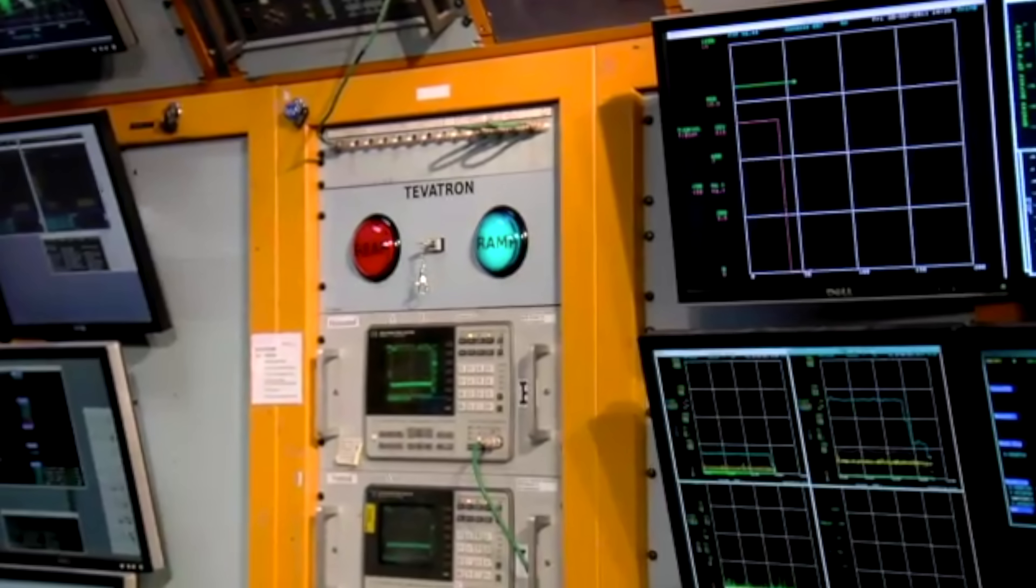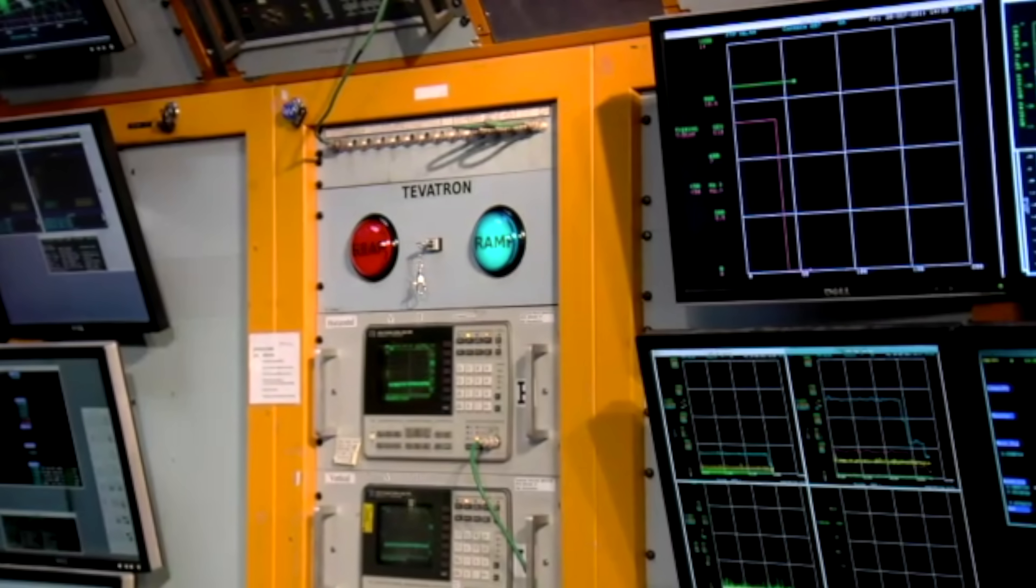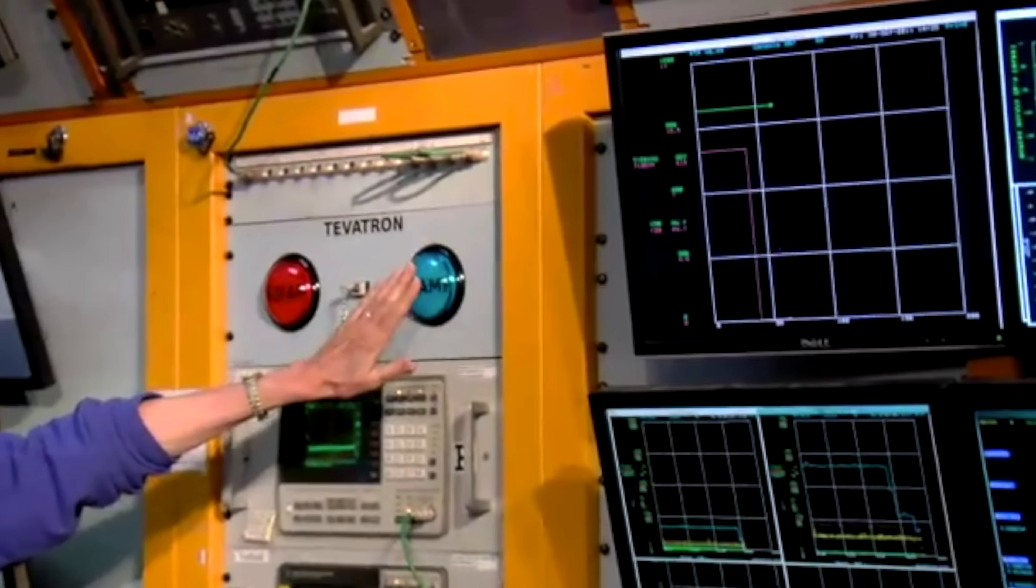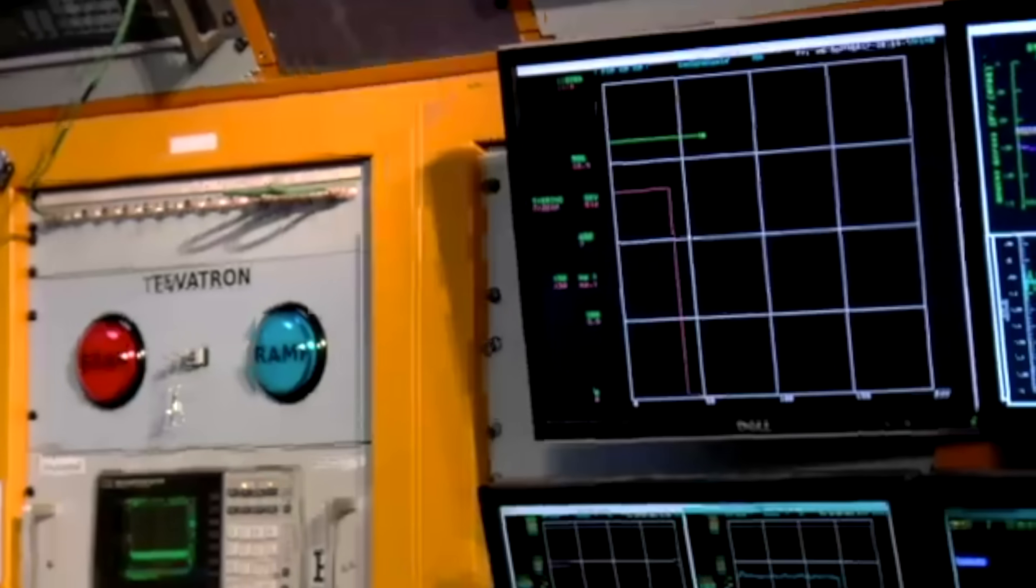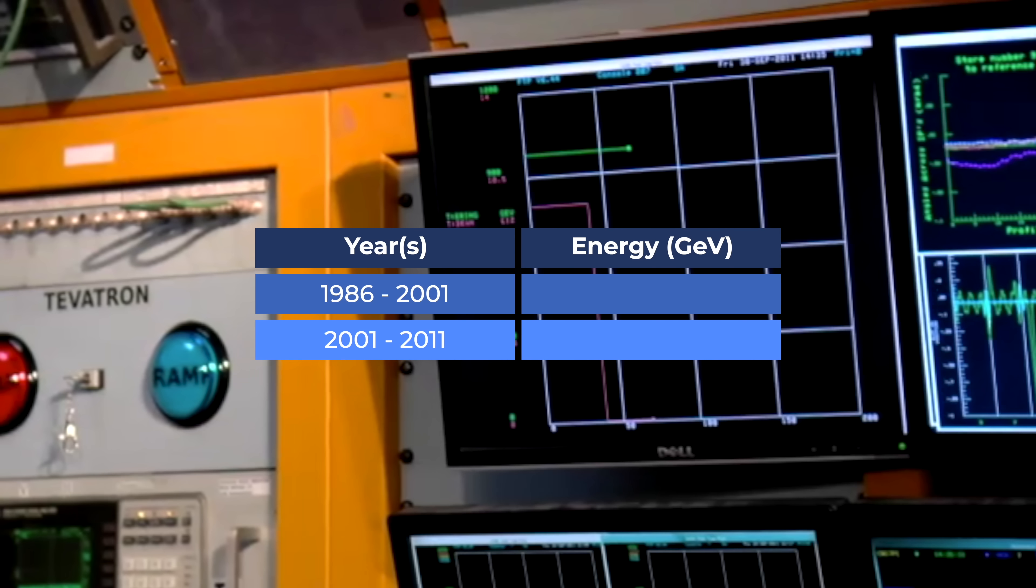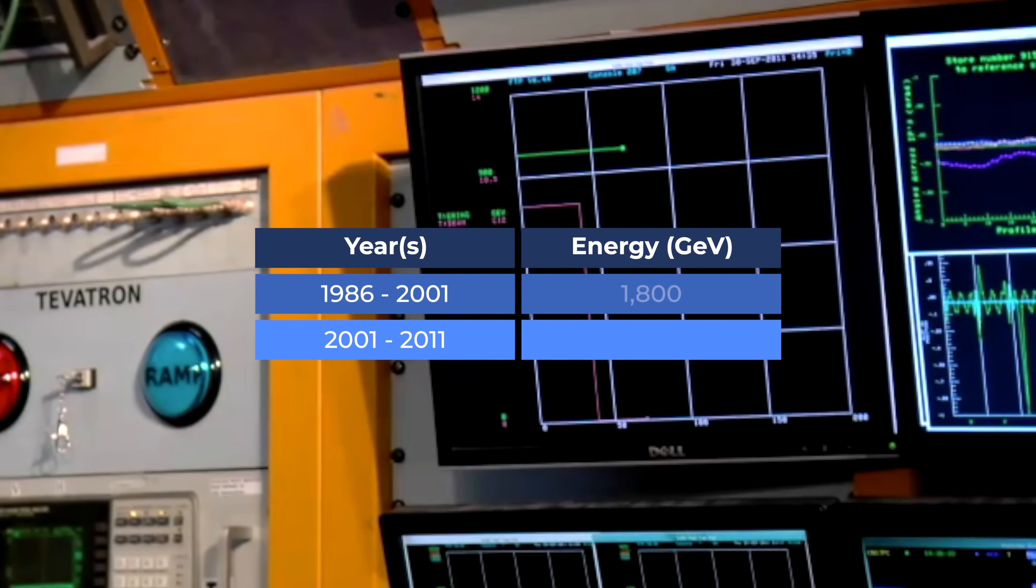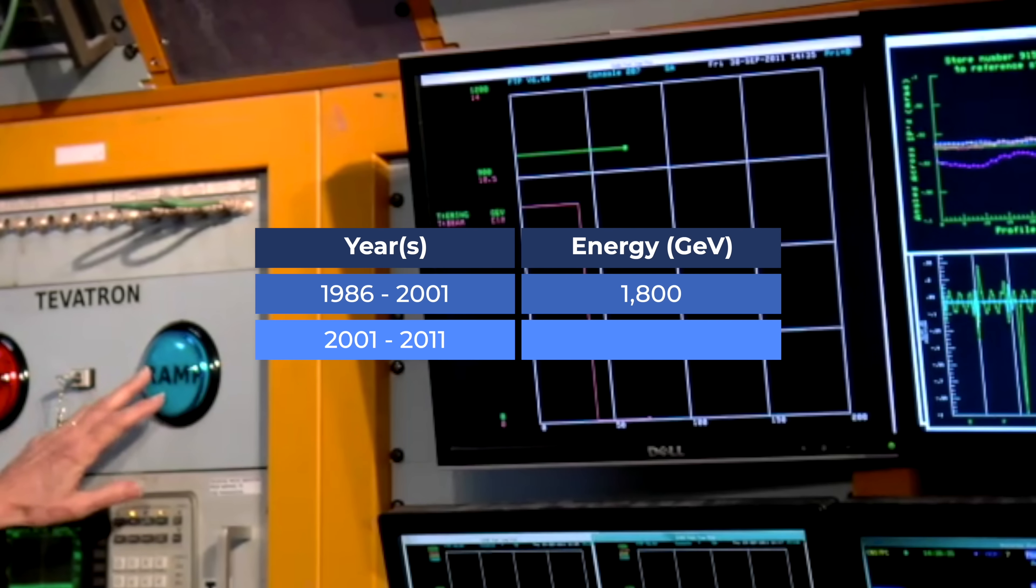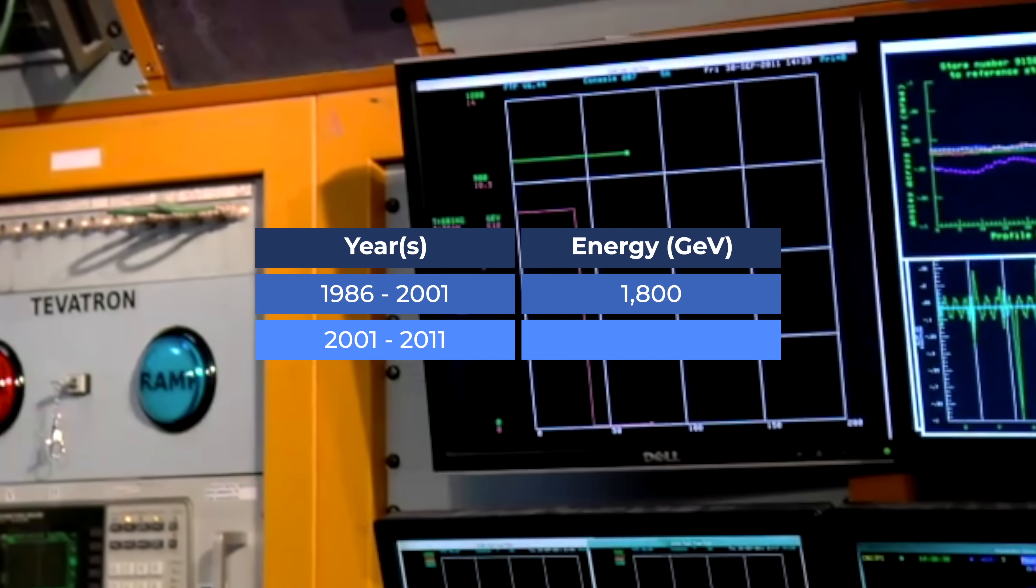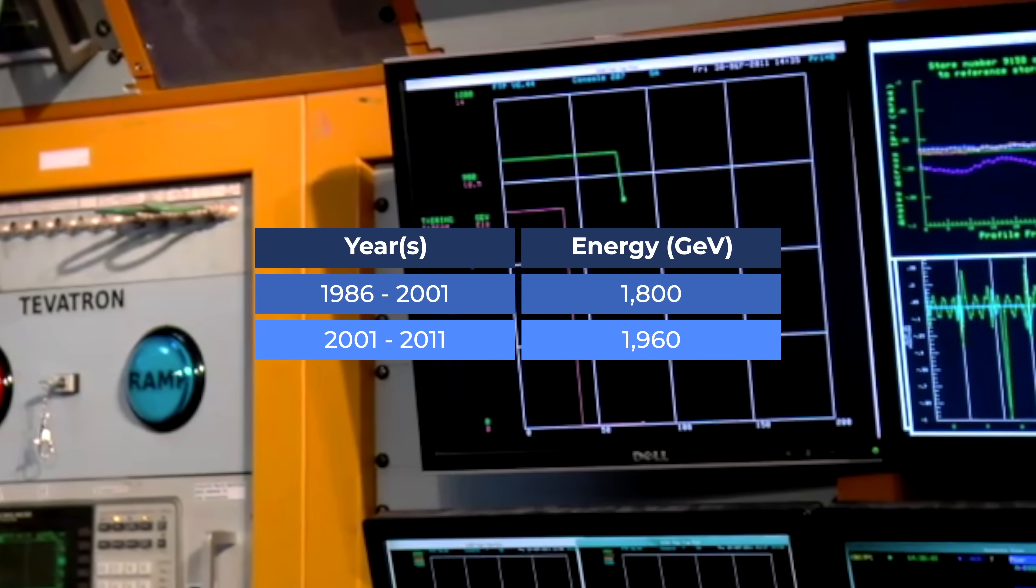The Tevatron operated at Fermilab, my research home. It operated from 1986 to 2011, and it collided protons and antimatter protons. From 1986 to 2001, the collision energy was 1,800 GeV. From 2001 to 2011, the collision energy was 1,960 GeV.